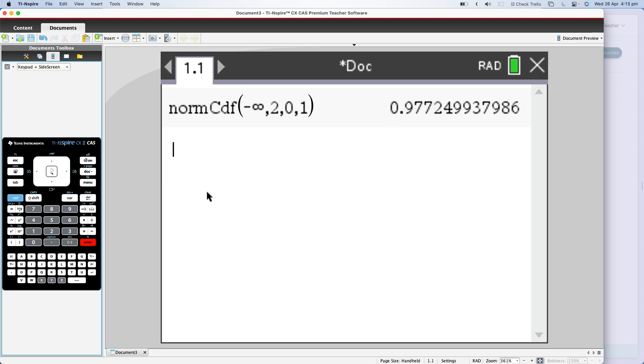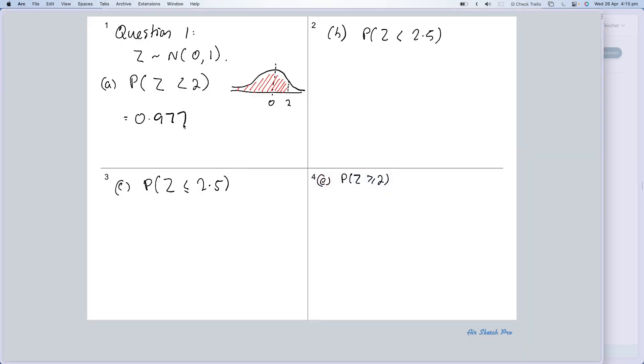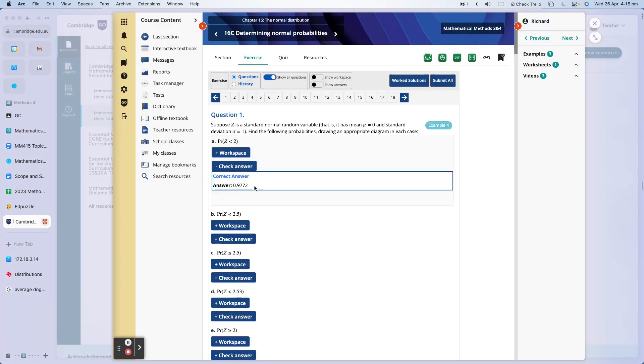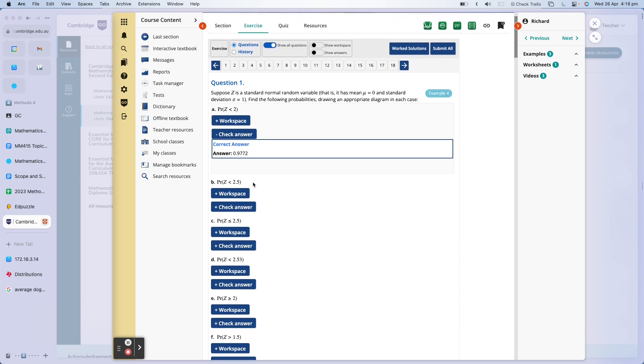So I'm writing that down myself now and then I'll go back to the screen so you can see it. There it is there, 0.977. If I flick over to the answer, you can see the answer is 0.9772. They've gone to four decimal places, with a diagram.